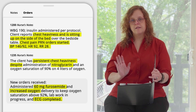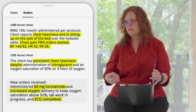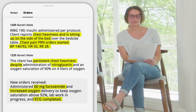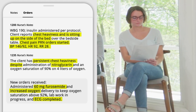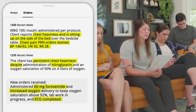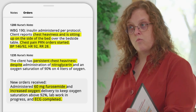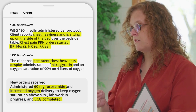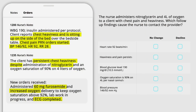Before you even look at the question, what things are you thinking? Oxygen is kind of low even though they're on four liters. The chest pain persists after nitro. The difference between angina and a heart attack is what happens with nitroglycerin — angina should be relieved by nitro, and if it's not, that's when you're worried about it persisting.